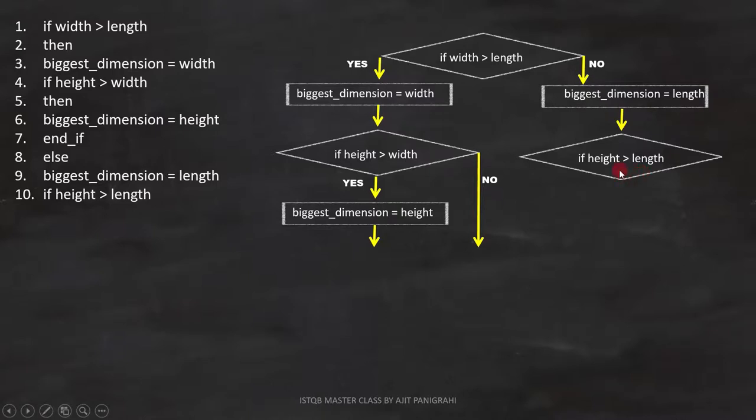Now let's see line number 11 and 12. Then, biggest dimension equals to height. In flowchart, we have to represent it like this.